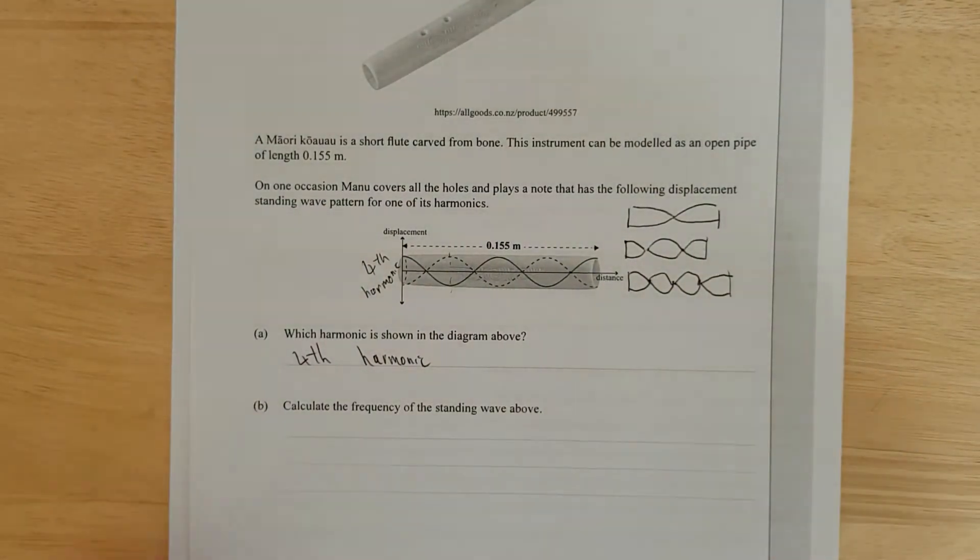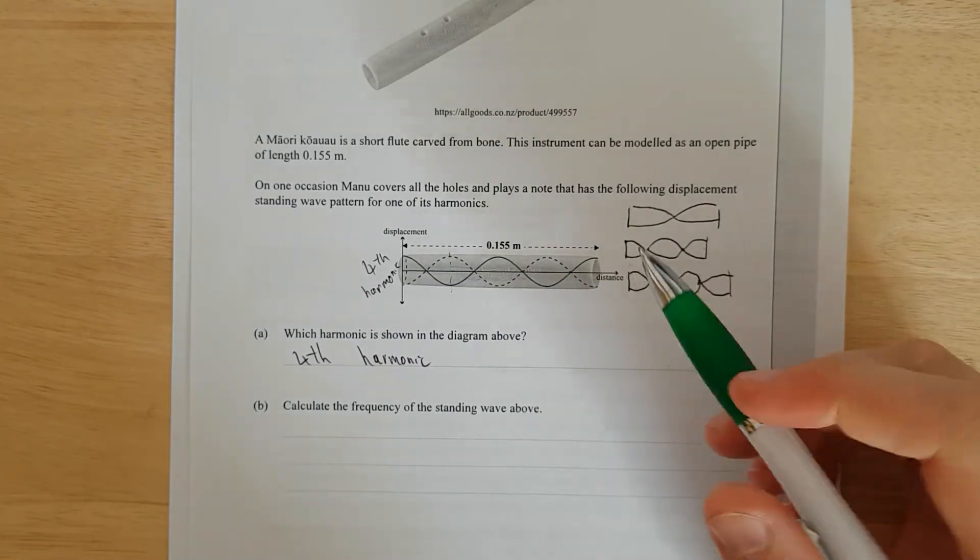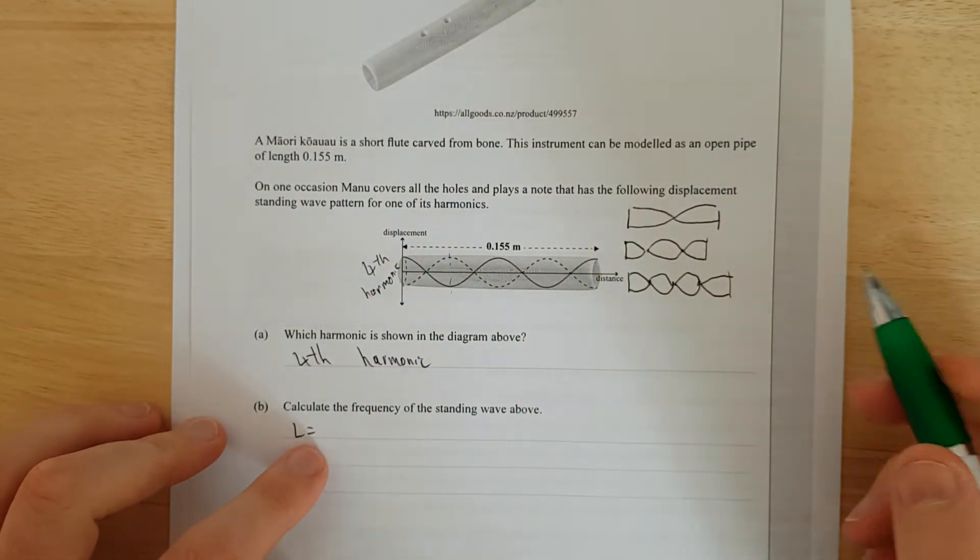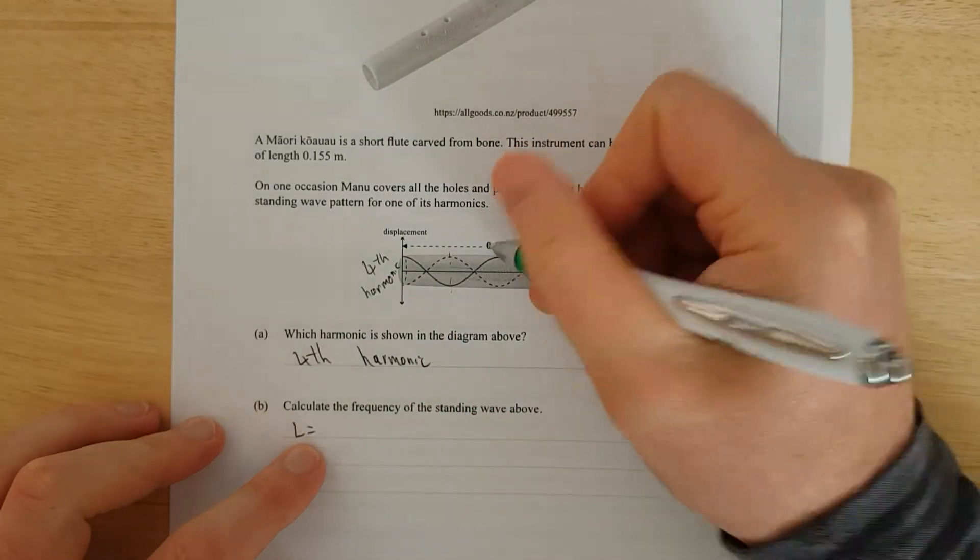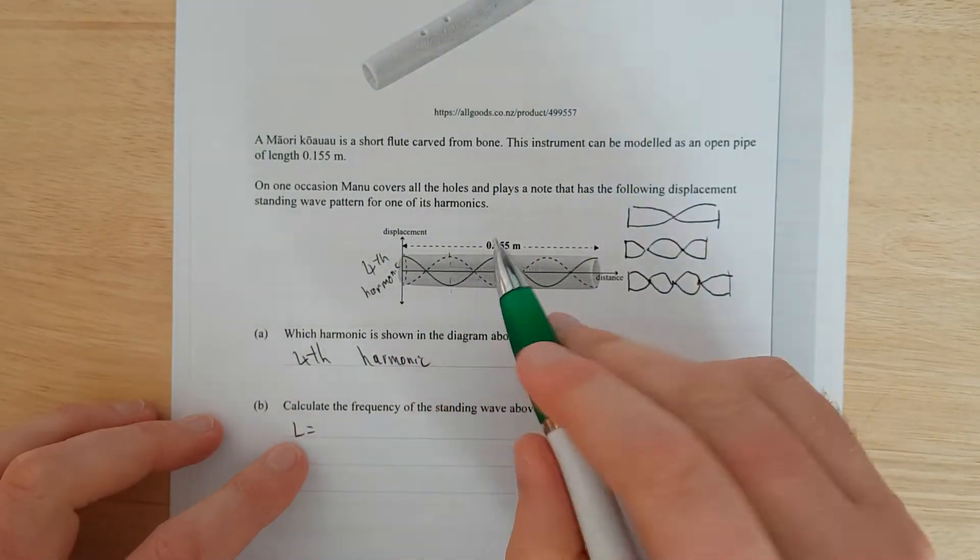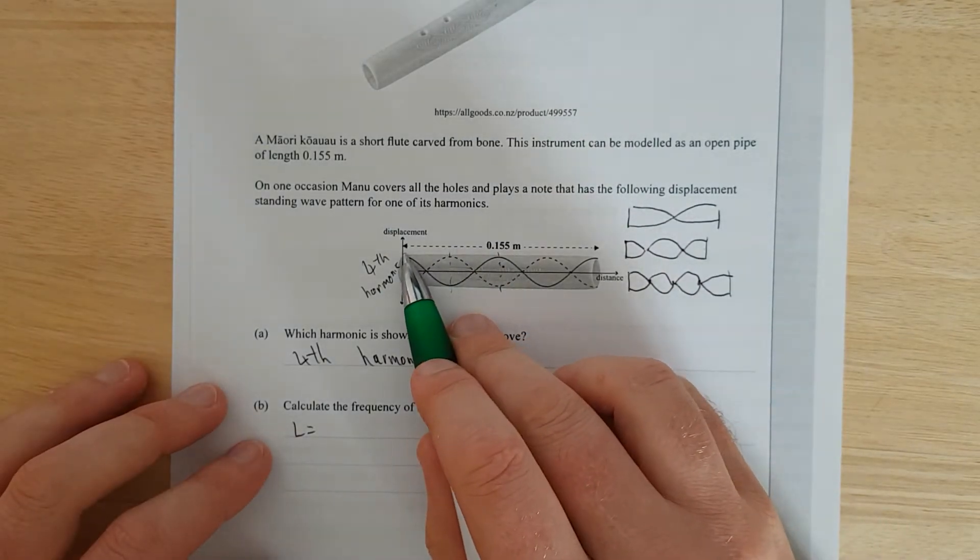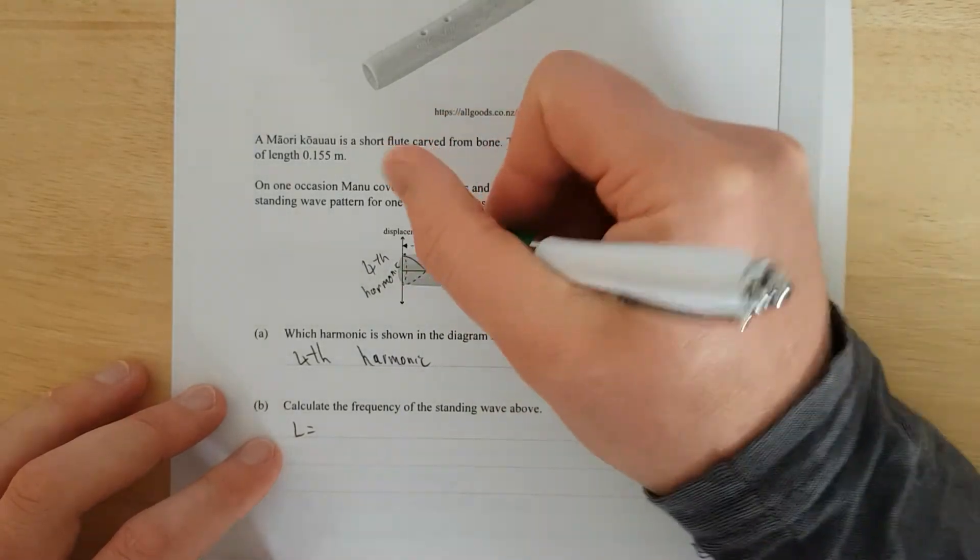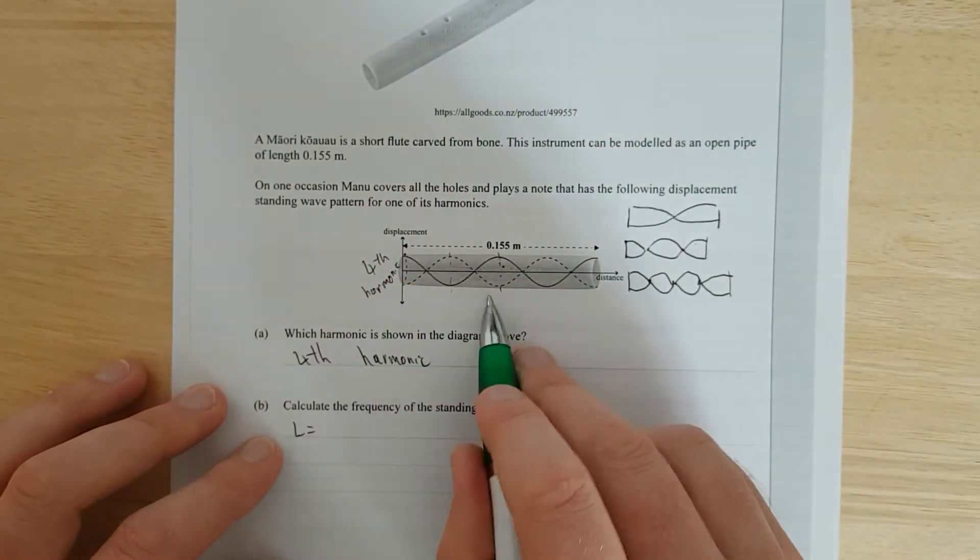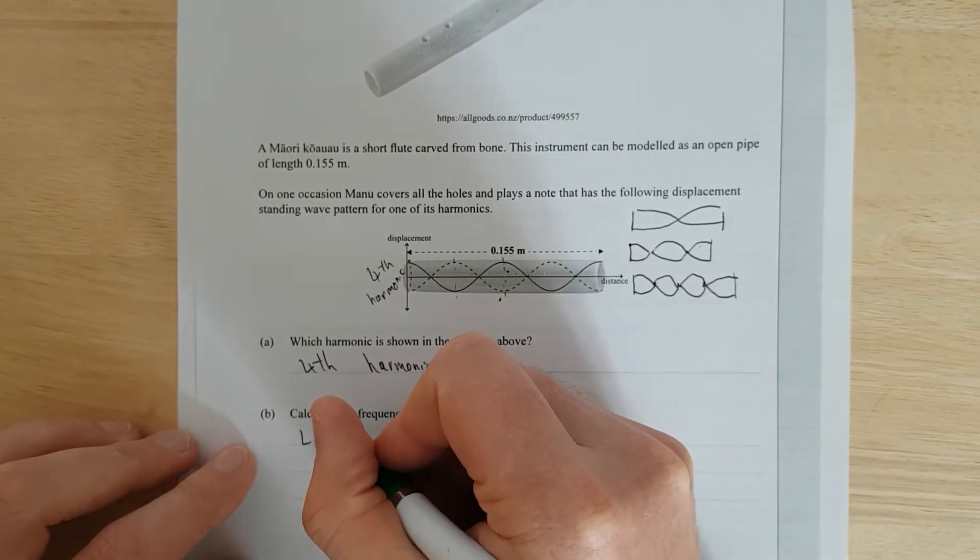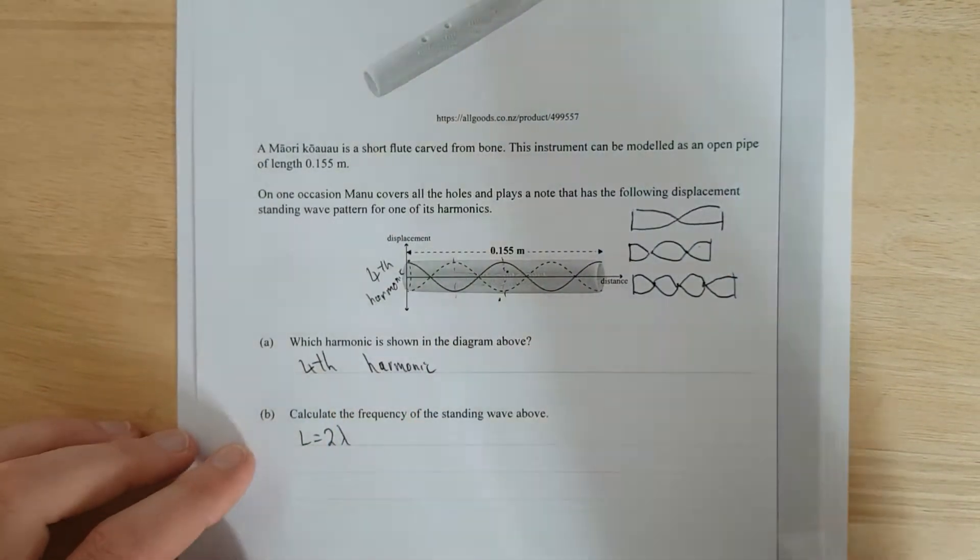Right. Calculate the frequency of the standing wave above. To do this, we just need to say the length is equal to how many waves. We've got from this side to here is one full wave, because a wave just went into the pattern repeats itself. So we start at the top, back to the top again. So it's one wave from here to the center. And then if we just mirror that, we've got two waves. So the length is equal to two waves, or two wavelengths.